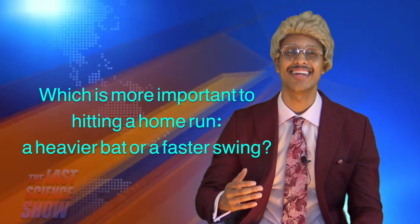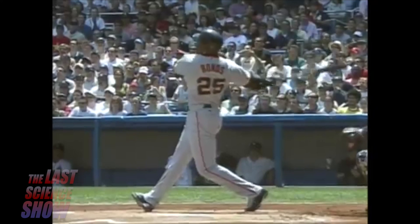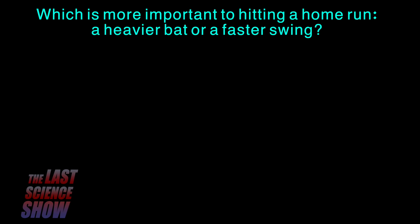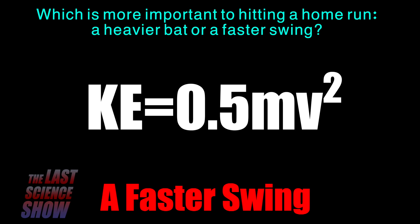Which is more important to hitting a home run — a heavier bat or a faster swing? In order to answer this question correctly, we need to understand the kinetic energy formula: KE equals one-half mass times velocity squared. The answer is a faster swing, simply because the formula shows us that velocity is squared. So velocity affects kinetic energy more than mass does. A faster swing has a greater effect because the velocity is squared. Your final answer would be: a faster swing is more important to hitting a home run.